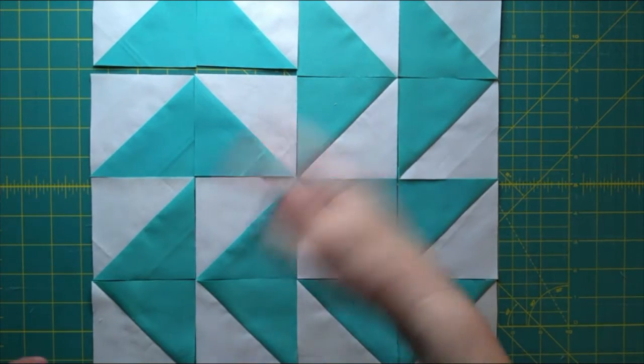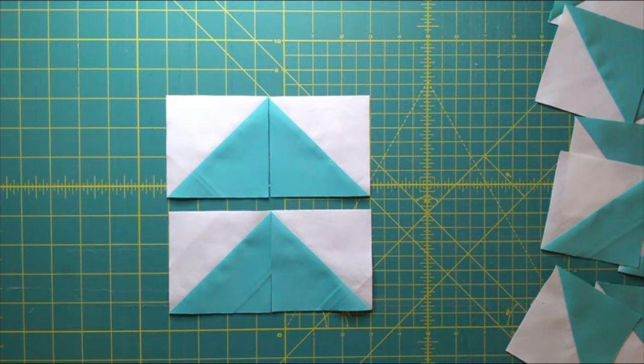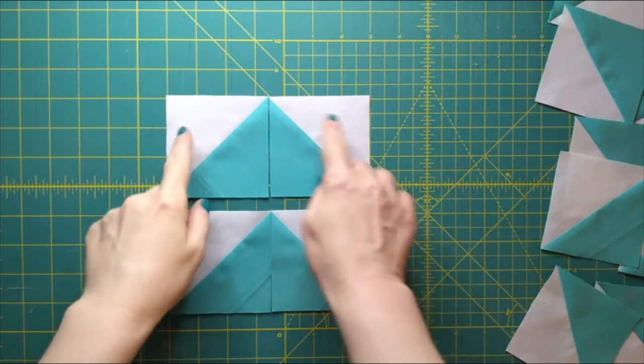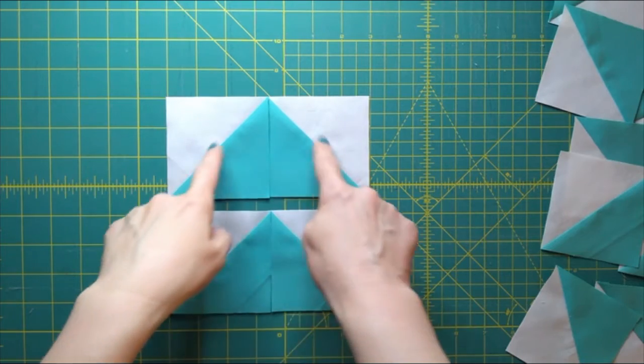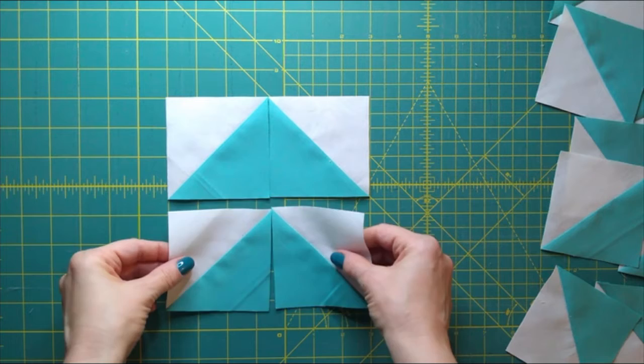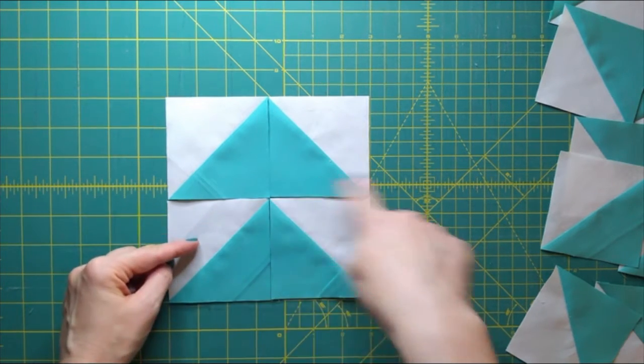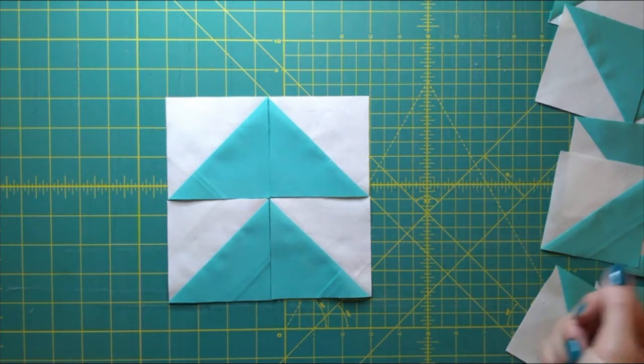And with that I can go ahead and chain piece all of them because they're all facing the same direction. So I can just do them all, chain piece, and then move on to the next step. And the next step for me after I've chain pieced all of the pairs together into flying geese units is to then take two flying geese units and sew them together into a small block. So we'll have four of those small blocks.